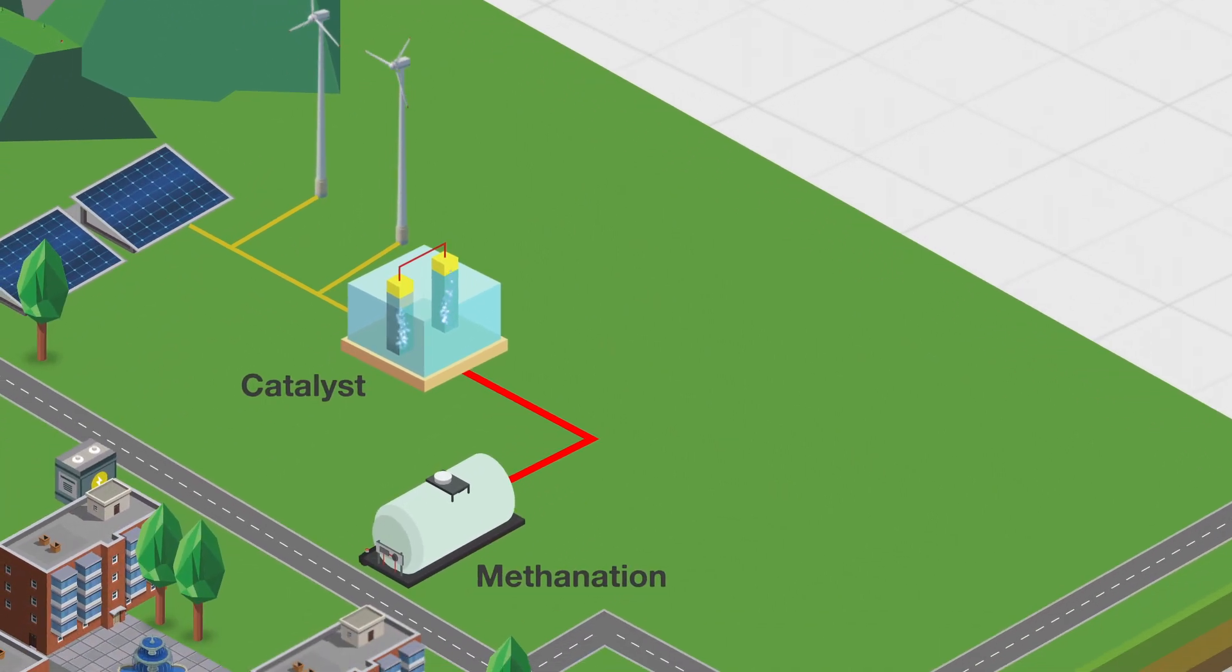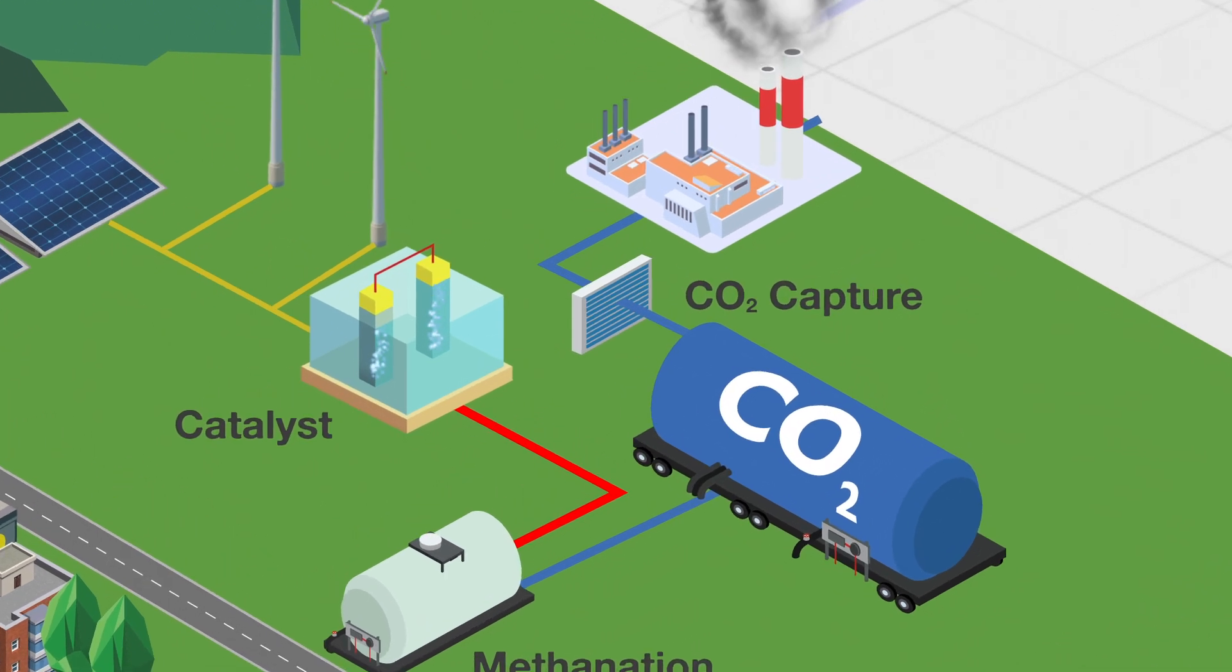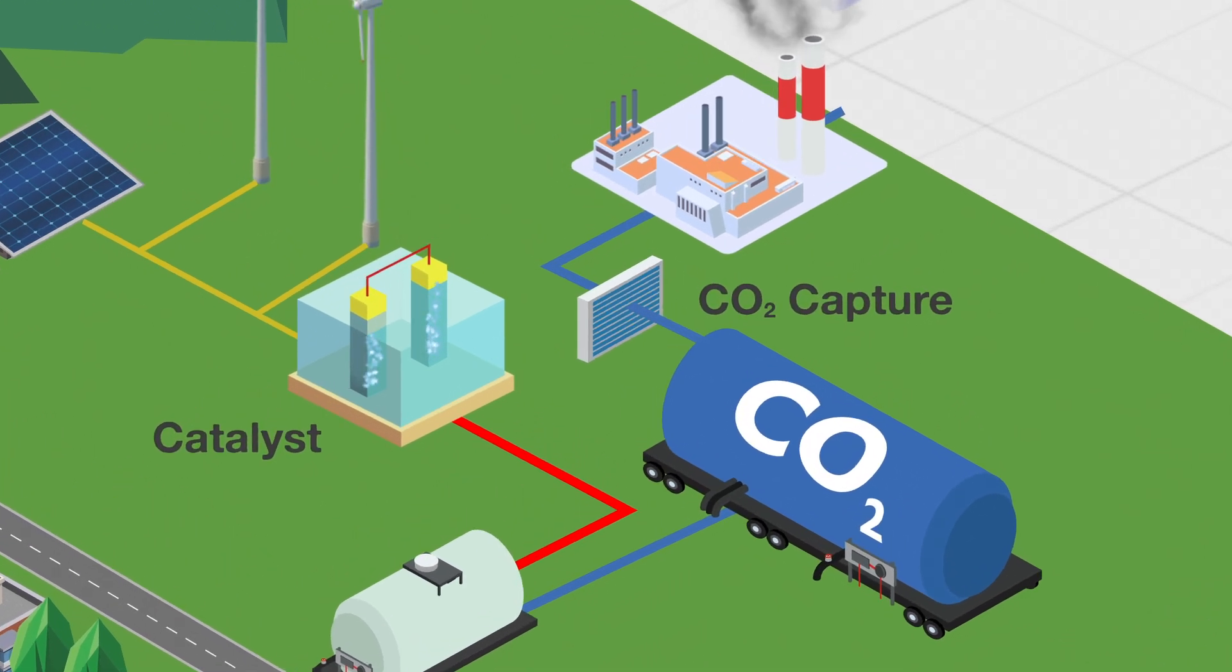Moreover, the CO2 needed for methanation is abundantly available thanks to emissions from human activities. It turns out that we're able to capture CO2 using graphene membranes. Metallic organic frameworks, or MOFs, capture it and the membranes filter it.